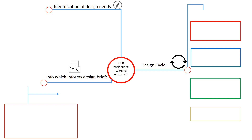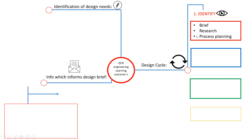We're going to look at OCR learning outcome number one, mainly the design cycle. The first phase is 'Identify.' Within this we've got various things: the brief, which is the opening statement around what we are designing and why; research, ways in which we can gather information regarding the brief; and process planning, how we can plan the process of designing and making.